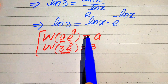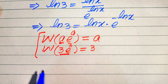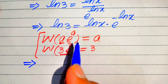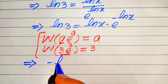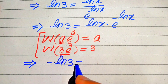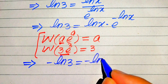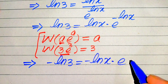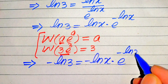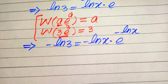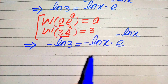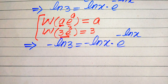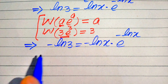Here we multiply both sides by minus 1. After multiplying by minus 1 on both sides, it becomes: minus log 3 equals minus log of x multiplied by e to the power of minus log of x. Now the exponent of e is multiplied by the same term, and we are ready to apply the Lambert W function.